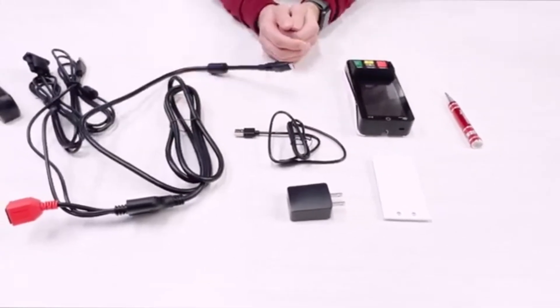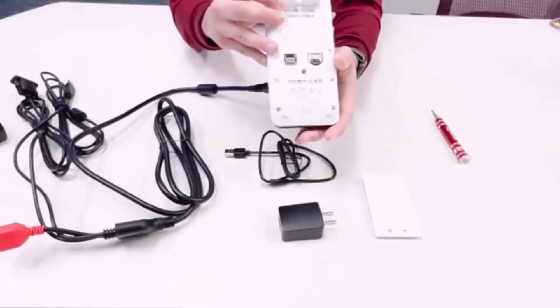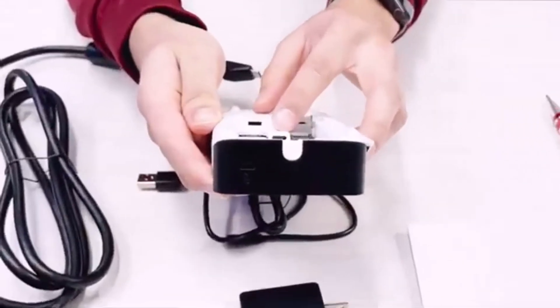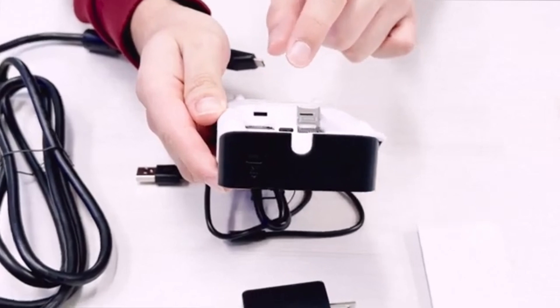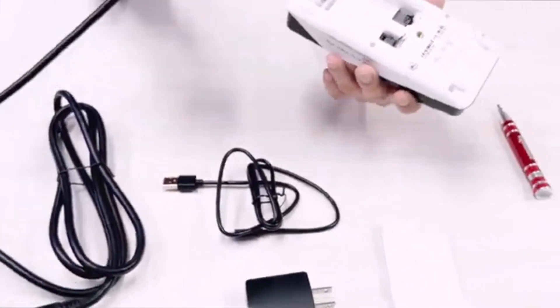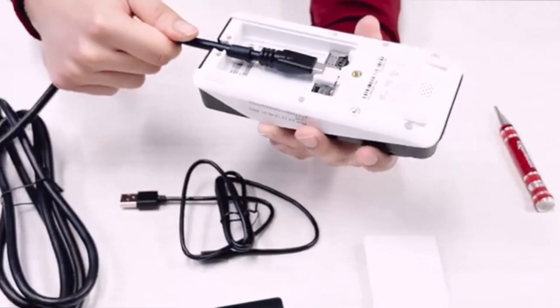First thing you'll want to do is look on the back of the A35 device. You'll notice that there is a USB Type-C port here in the middle. So what you'll want to do is take this main USB Type-C cable and feed it into this hole here.